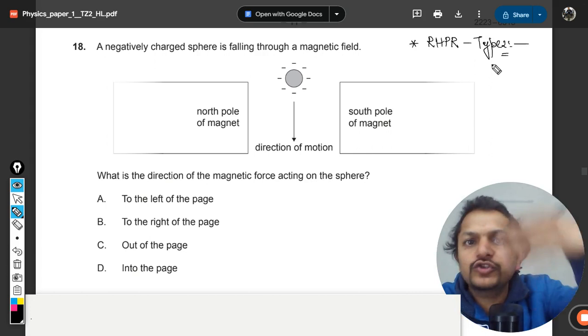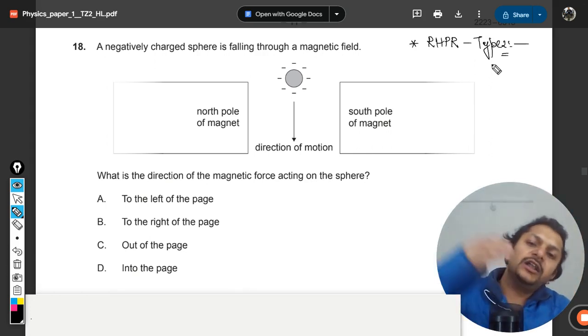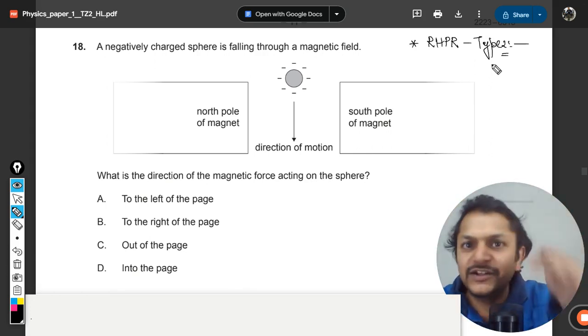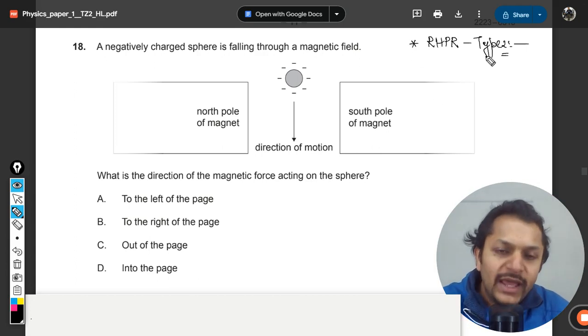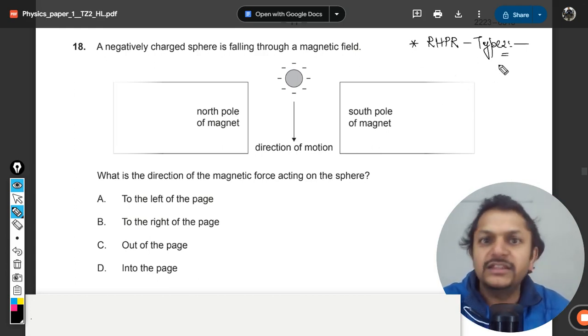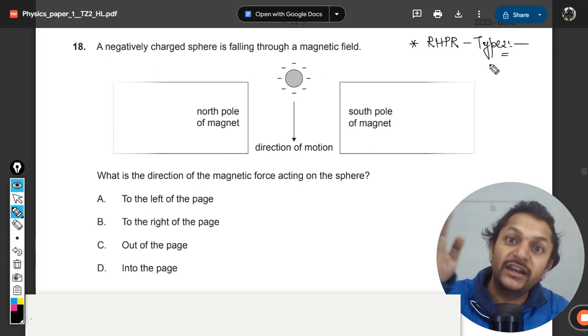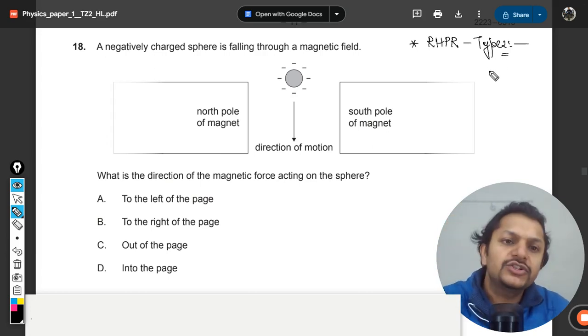Let me explain this right hand palm rule type 2. Type 2 is about finding the force on a charged particle, like a positive charge or negative charge. There are three types: positive charge, negative charge, and electric current wire. We would be talking about the negative charge.